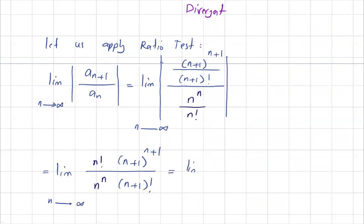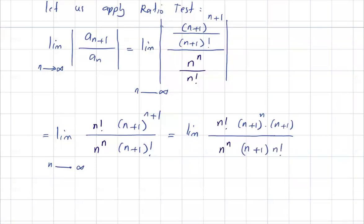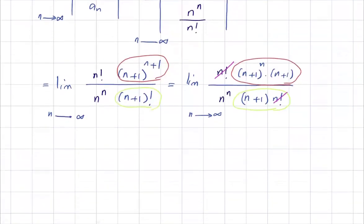Taking the limit as n goes to infinity, we simplify further. We have n factorial times (n+1) to the power n times (n+1), divided by n to the power n times (n+1) factorial. We can cancel out the n factorial terms, giving us the limit of (n+1) to the power n times (n+1), divided by n to the power n, as n goes to infinity.